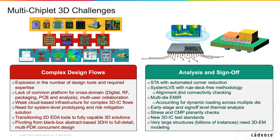Another challenge with system LVS: on cutting-edge package technologies there may not be a rule deck yet. There will certainly be rule decks for the chiplets, but not always for the system level. So the system LVS methodology needs to work in a rule-deck-free environment. Other challenges include CMP planarity in face-to-face direct bonding environments, which becomes critical and requires advanced tools for the chemical-mechanical polishing effects on face-to-face attachments.